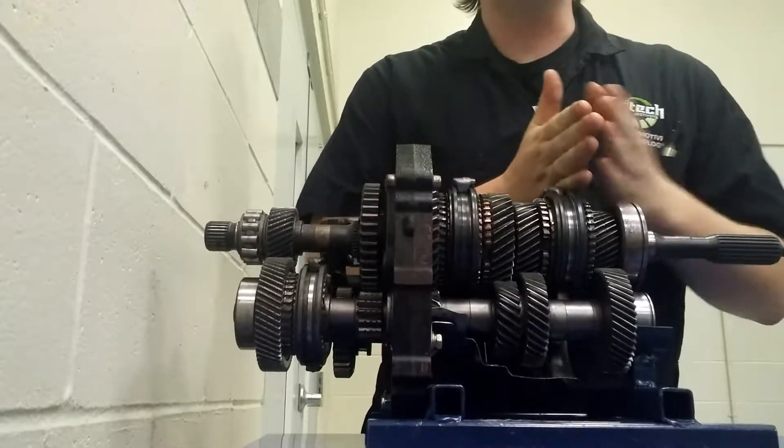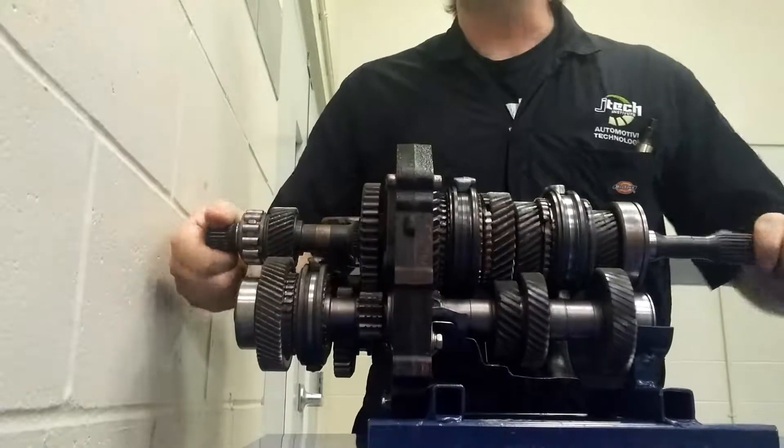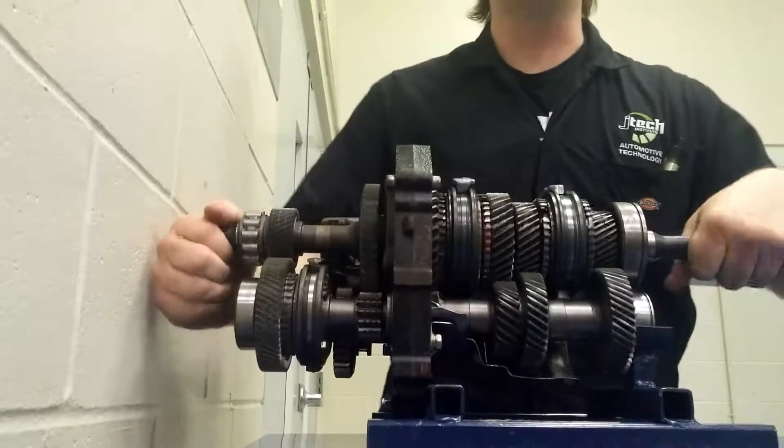Right about here, the input shaft and the output shaft are actually separated. So they're actually two different shafts. That's why when I'm in neutral, I can spin them in different directions.